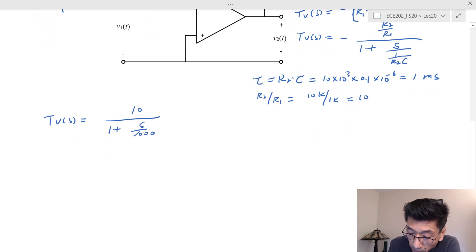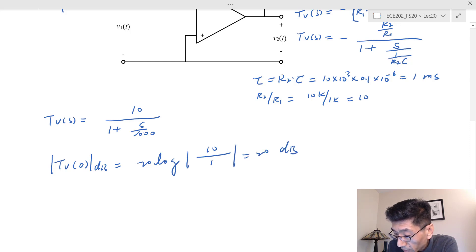If we look at this transfer function at low frequency, TV(0) in dB is going to be 20 log of 10 over 1. So we get 20 dB at zero frequency. At low frequency we basically get a flat line at 20 dB.